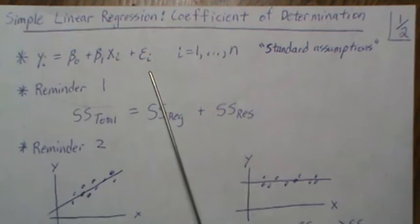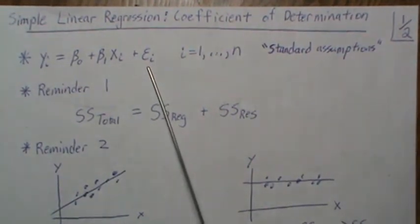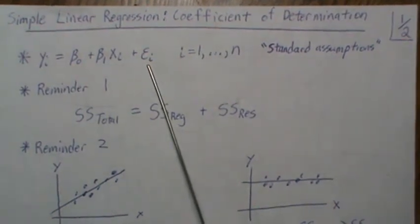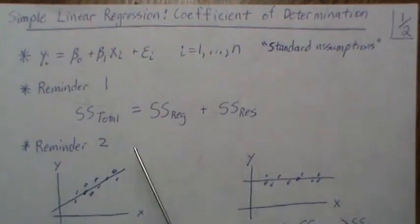In this video we only need the standard assumptions: that the mean of epsilon is zero, the variance is sigma squared, and the covariance between epsilon_i and epsilon_j is zero.